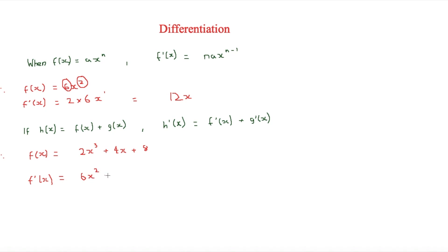The next term is 4x, which is 4x to the 1. So 4 times 1 is 4, and 1 minus 1 equals 0, so it's just 4. Then the constant 8 cancels out to zero. So the full derivative is simply 6x squared plus 4.